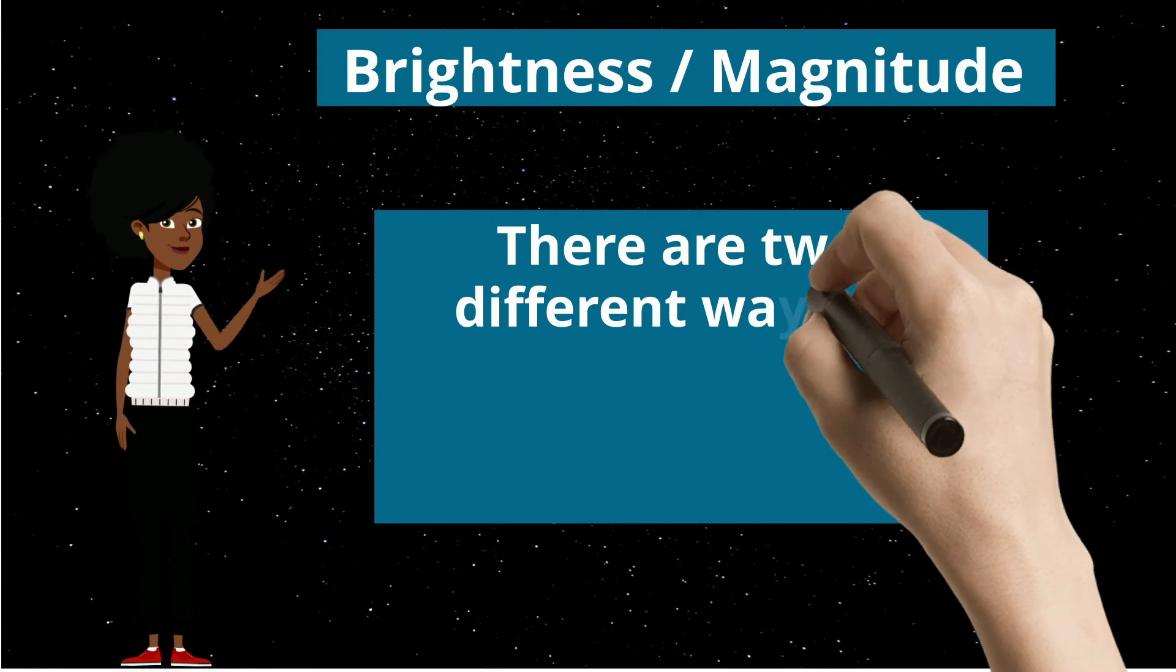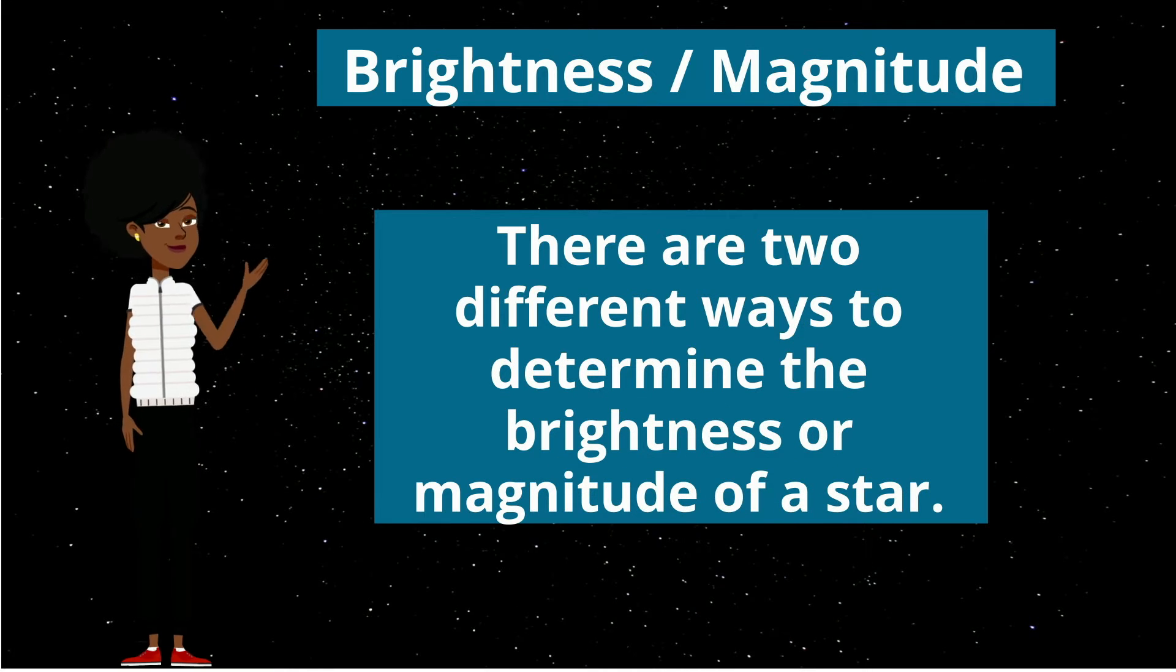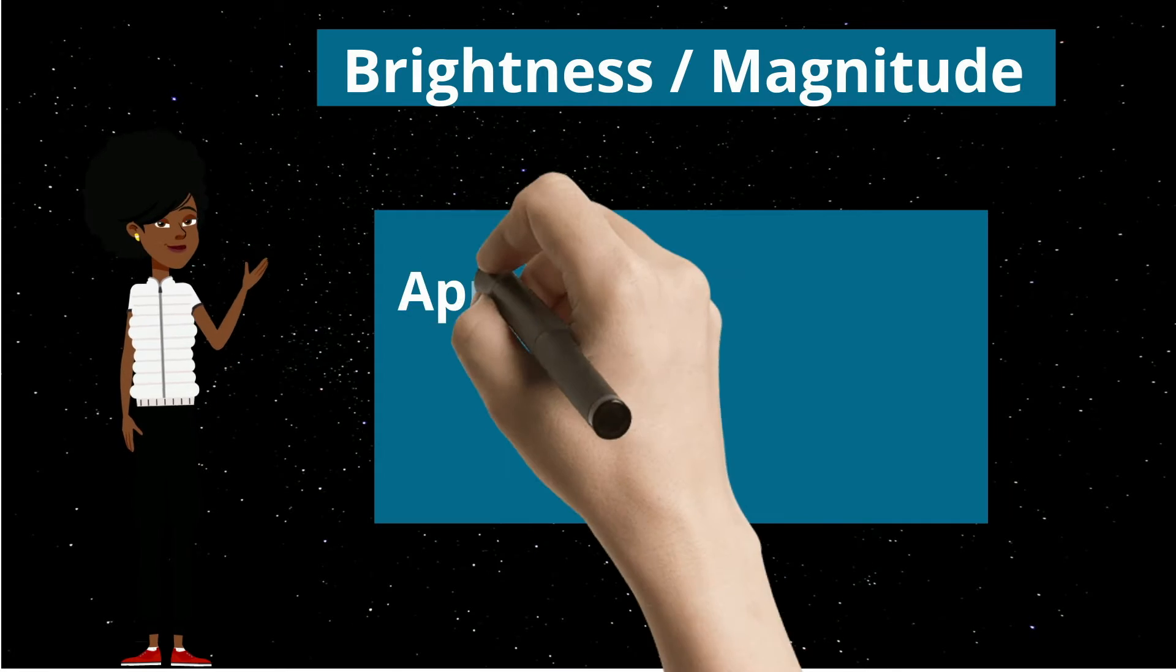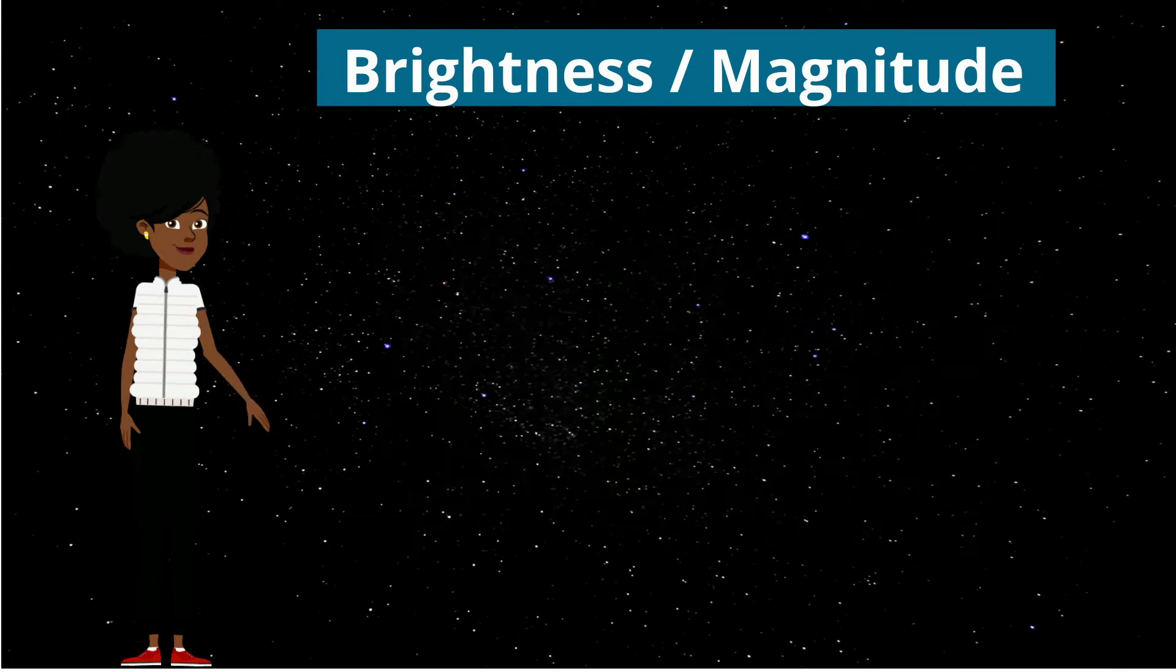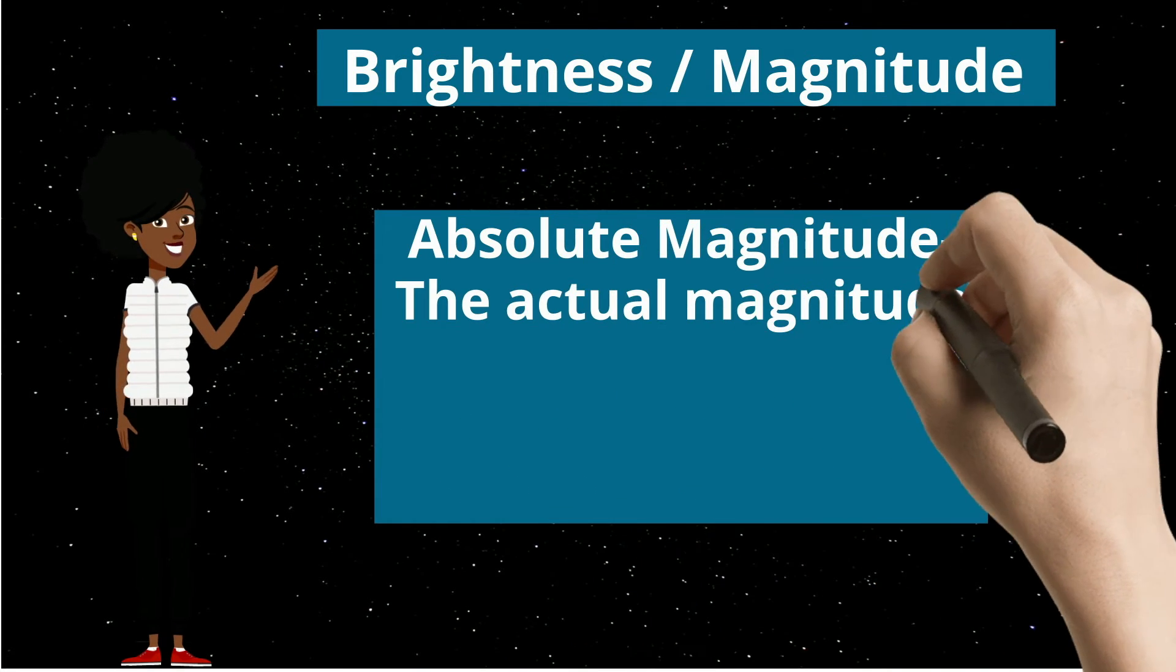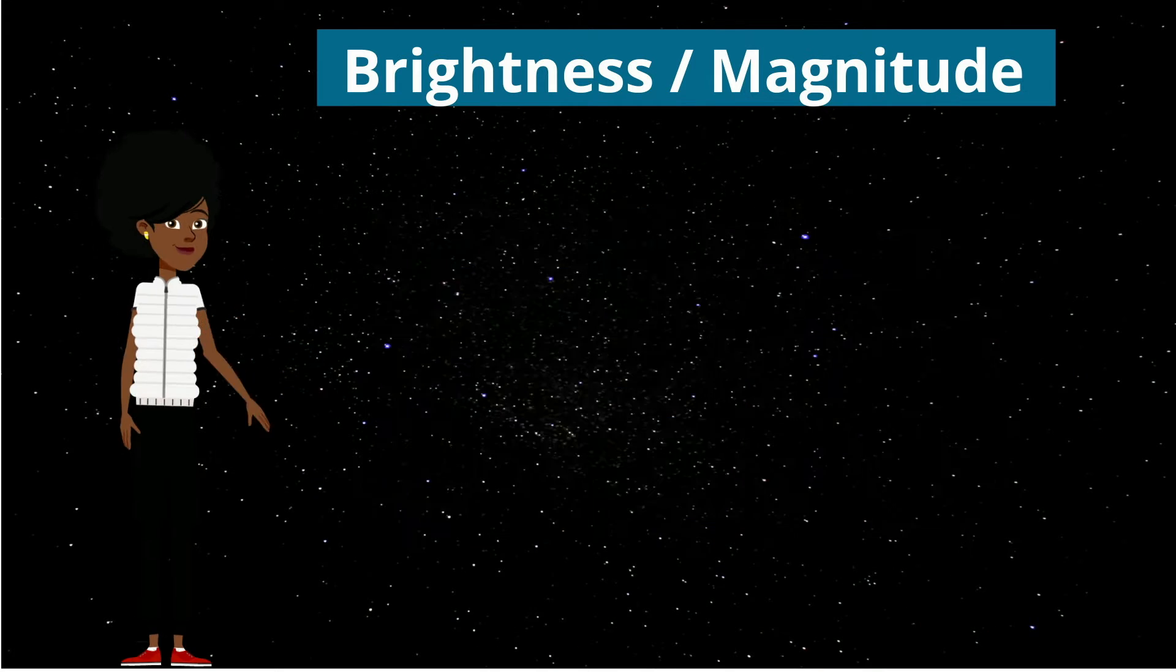Moving on to brightness and magnitude. There are two different ways to determine the brightness or magnitude of a star. Apparent magnitude is how bright the star appears to us. But absolute magnitude is the actual magnitude of the star if its distance was 10 parsecs from Earth.